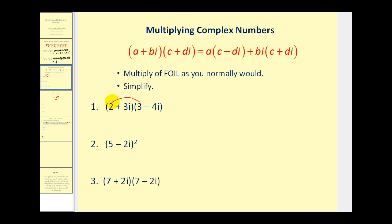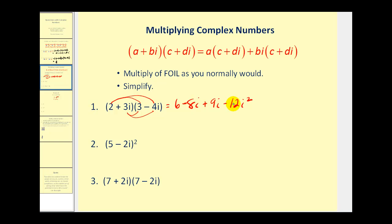Here we'd have six minus eight i, then we'd have nine i minus twelve i squared. Now remember a complex number is in the form a plus bi, so we can't leave i squared in this product. We'll replace i squared with negative one, so we'll have negative twelve times negative one, which is positive twelve. Then we have a positive six, so that'll give us eighteen. And then negative eight i plus nine i would give us positive one i, or just plus i.